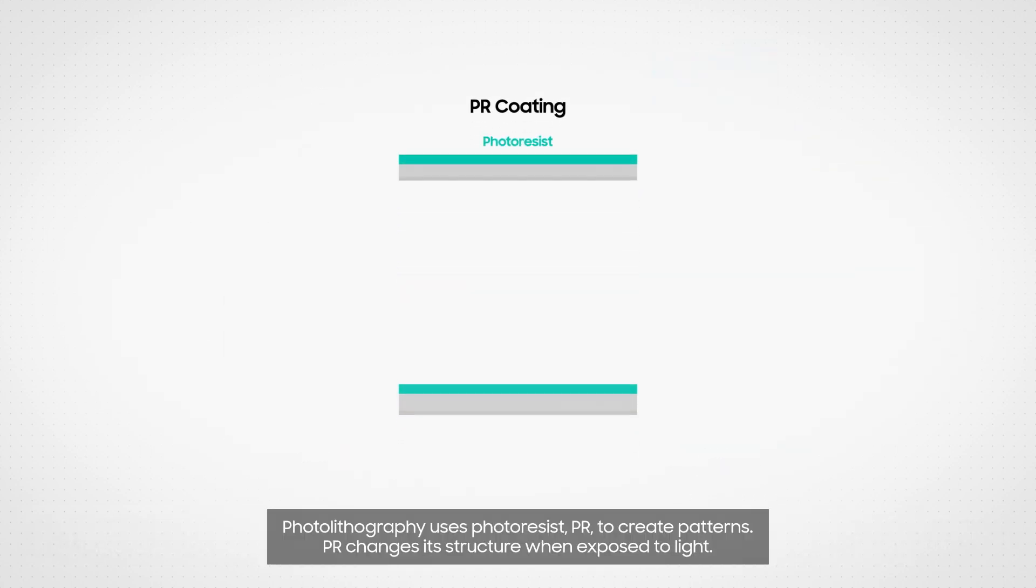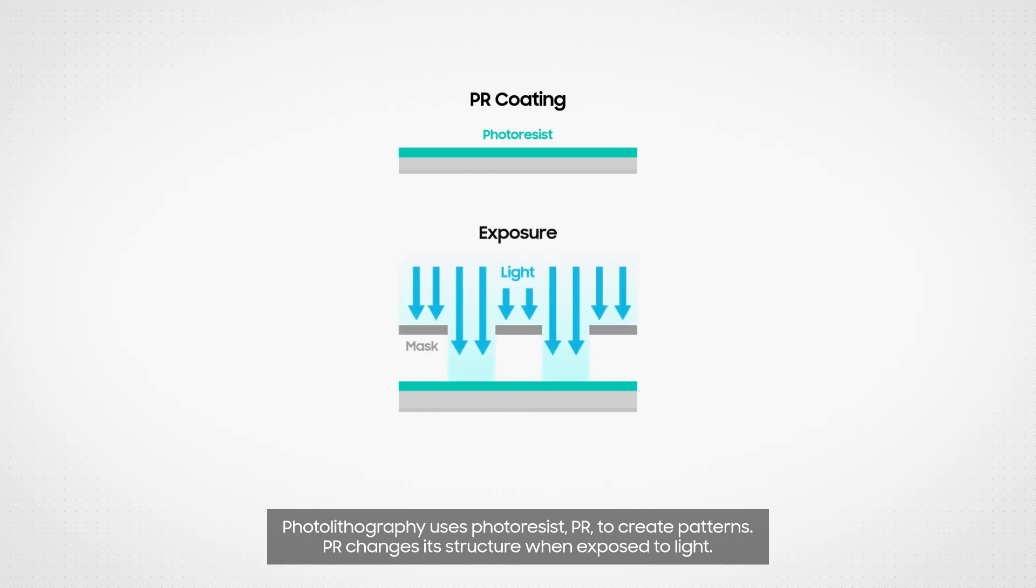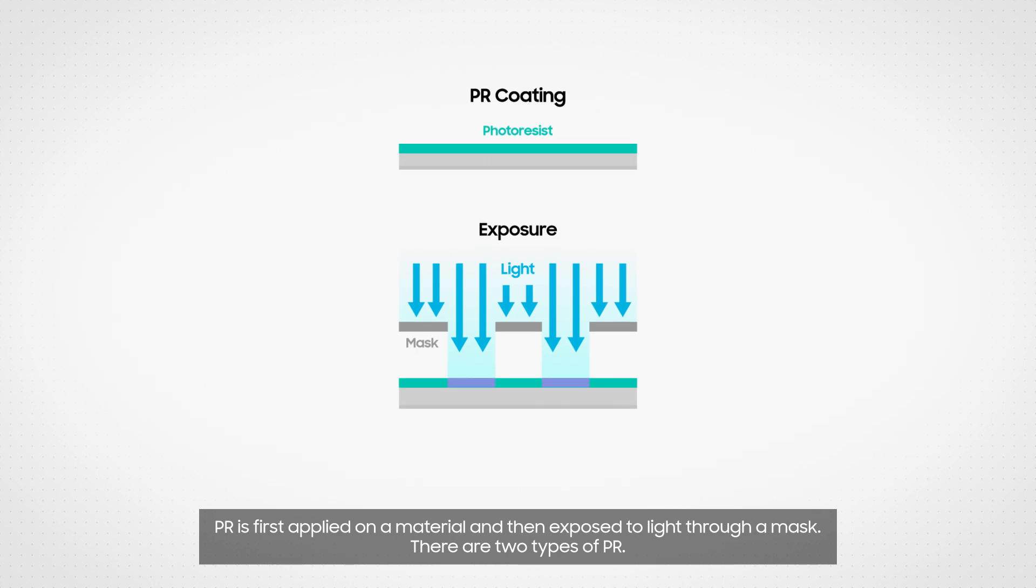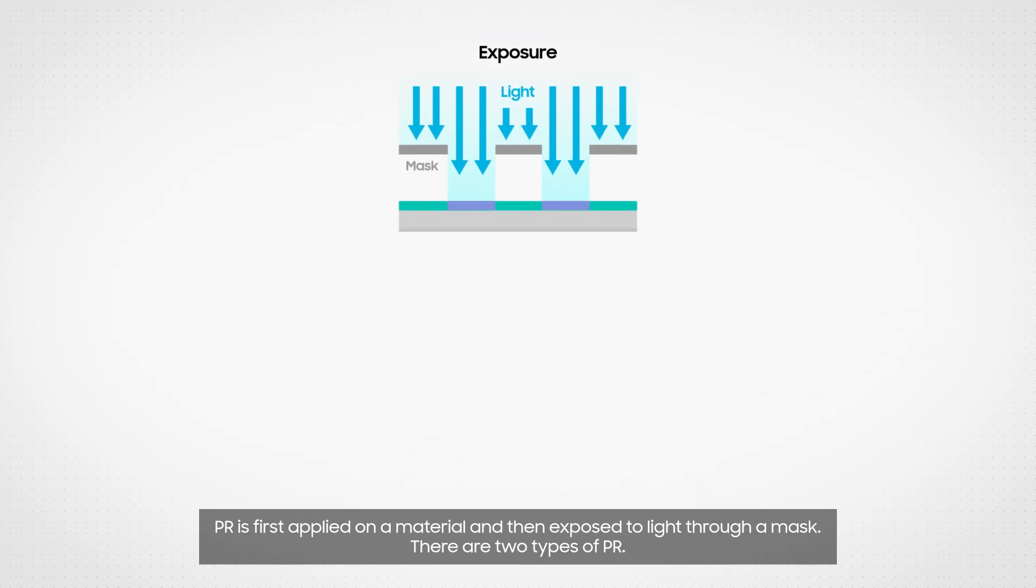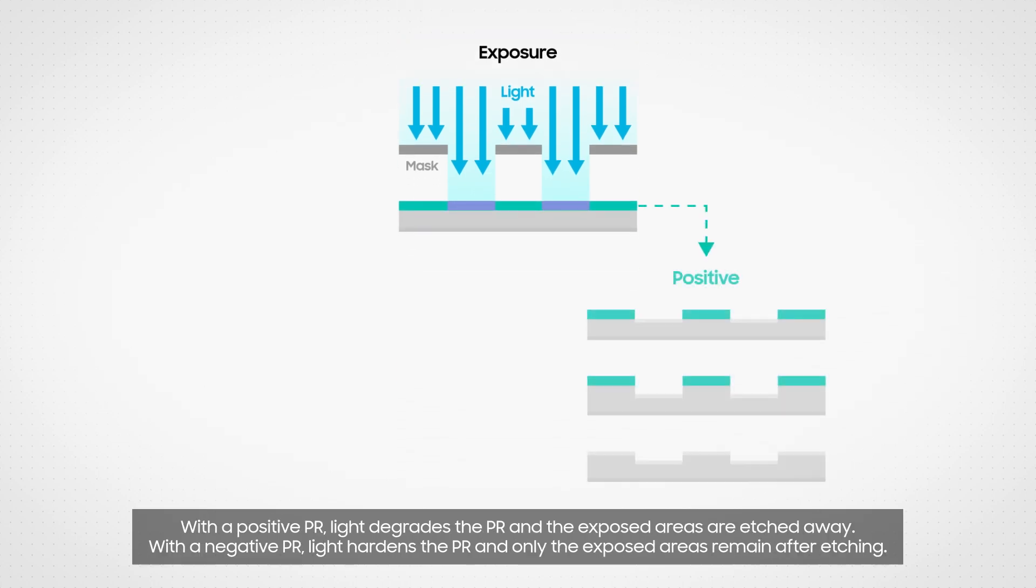Photolithography uses photoresist to create patterns. Photoresist changes its structure when exposed to light. PR is first applied on a material and then exposed to light through a mask. There are two types of PR. With a positive PR, light degrades the PR and the exposed areas are etched away. With a negative PR, light hardens the PR and only the exposed areas remain after etching.